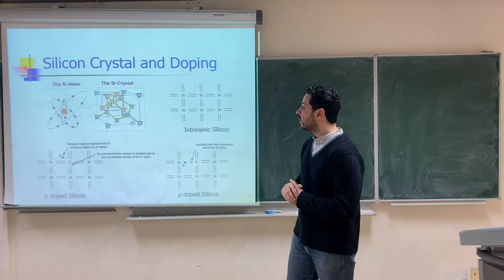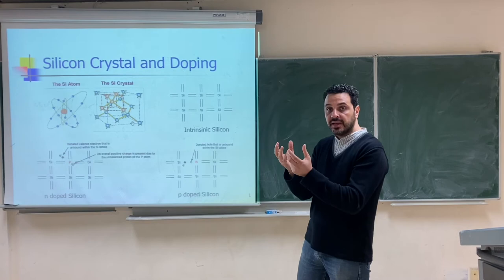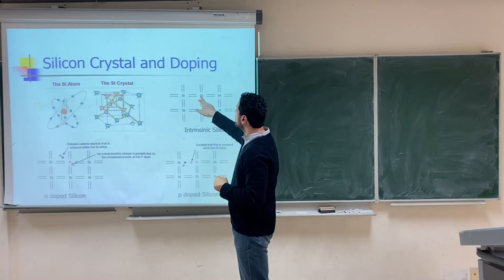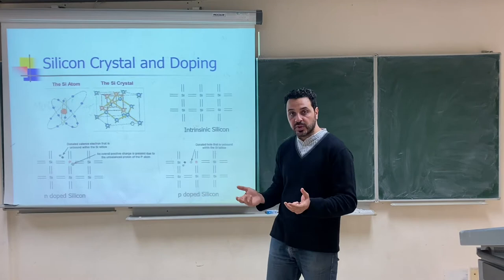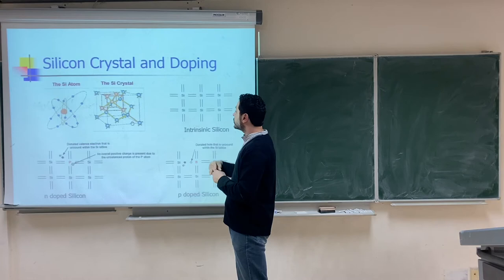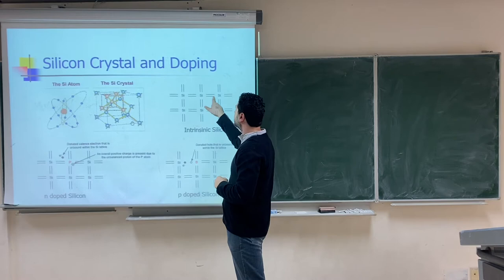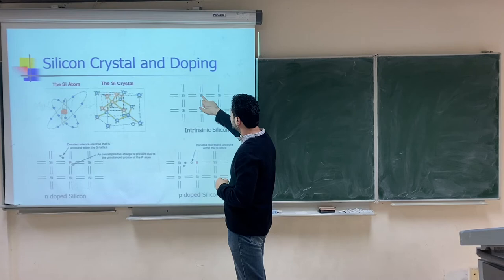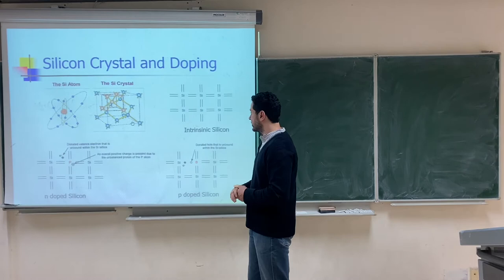Let's start with the semiconductor — the silicon crystal. Silicon atoms have four valence electrons in their last orbit. When the silicon crystal forms, each silicon atom forms bonds with four other silicon atoms so that it has eight electrons in the last orbit. Each atom shares one electron with each neighbor and takes one electron from it, giving two electrons per bond.